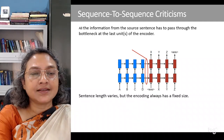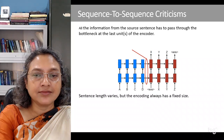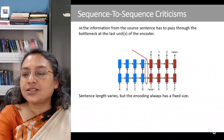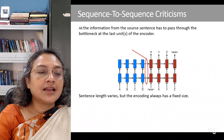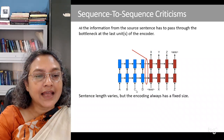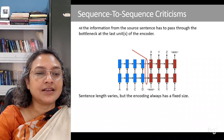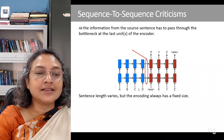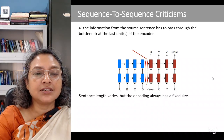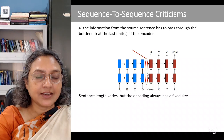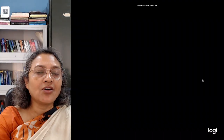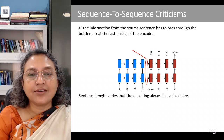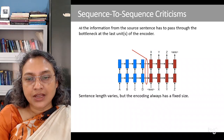One criticism of the sequence-to-sequence encoder-decoder based machine translation system is that the encoder looks at the entire sentence and captures it in a fixed-length vector. No matter how big the sentence is, all information is captured by a fixed-length vector, and therefore there may be a lot of loss in information. In the next class we will see how the attention model addresses this.